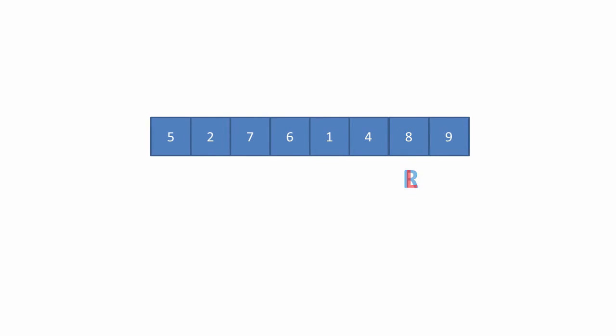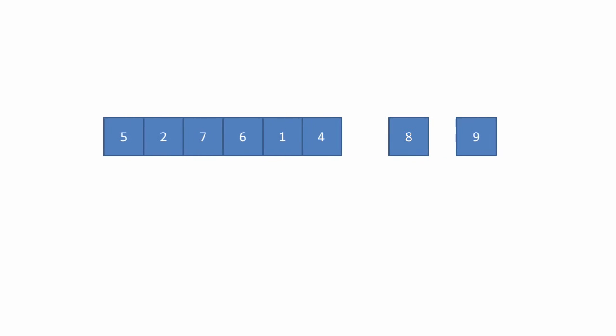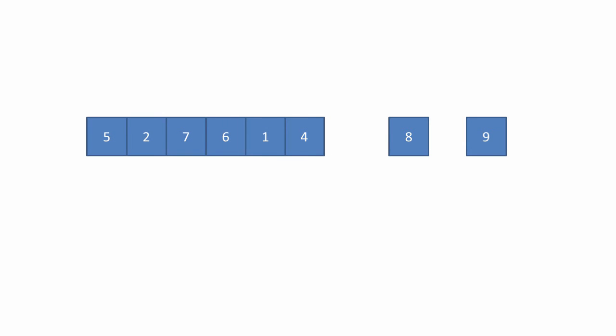We now have a sublist of one item — the value eight — and a sublist on the left of it where all of the items are smaller than eight, and a sublist on the right of it where all the values are bigger than eight; in this case there's only one item.